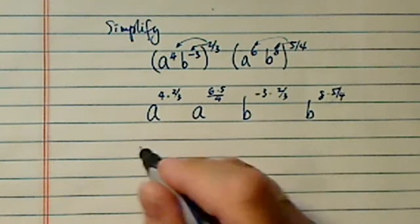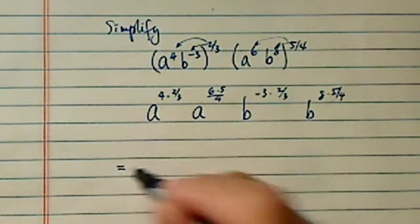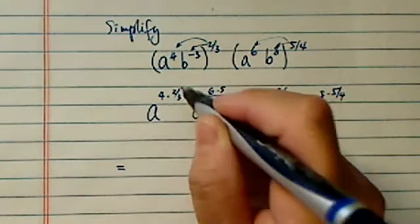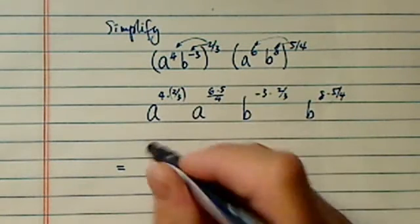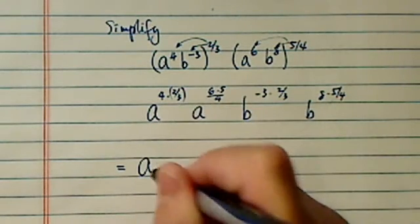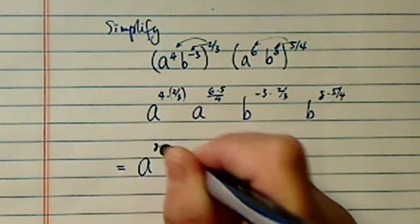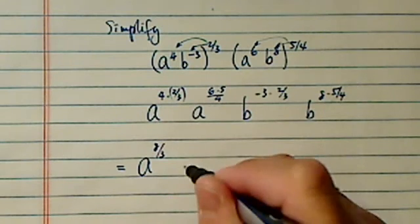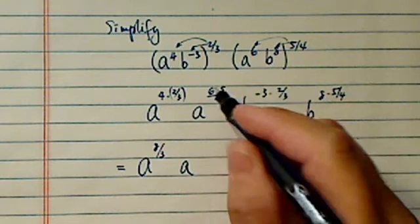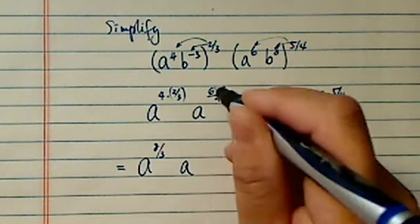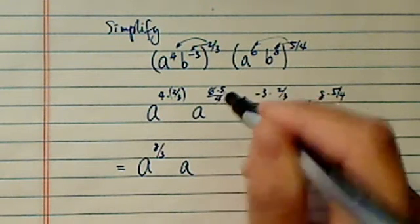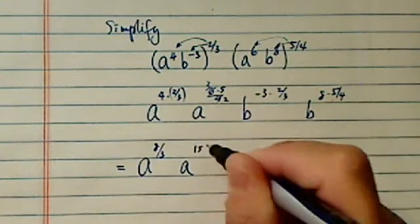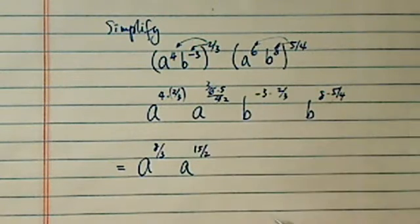So all I did in the first step is nothing fancy, just multiplication. Next, a is 8 over 3. And then a — combining this — is a 2, so it's 15 over 2.